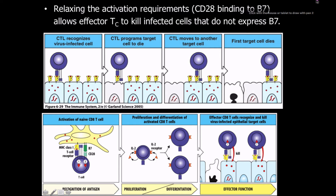Relaxing the activation requirement allows cytotoxic T cells to kill infected cells that do not express B7. This is really important, especially given the importance of B7 interaction for naive T cell activation. We need to be able to kill virtually any cell in the body that becomes infected with a virus, or that develops a cancer compatible with the CD8 T cell receptor.